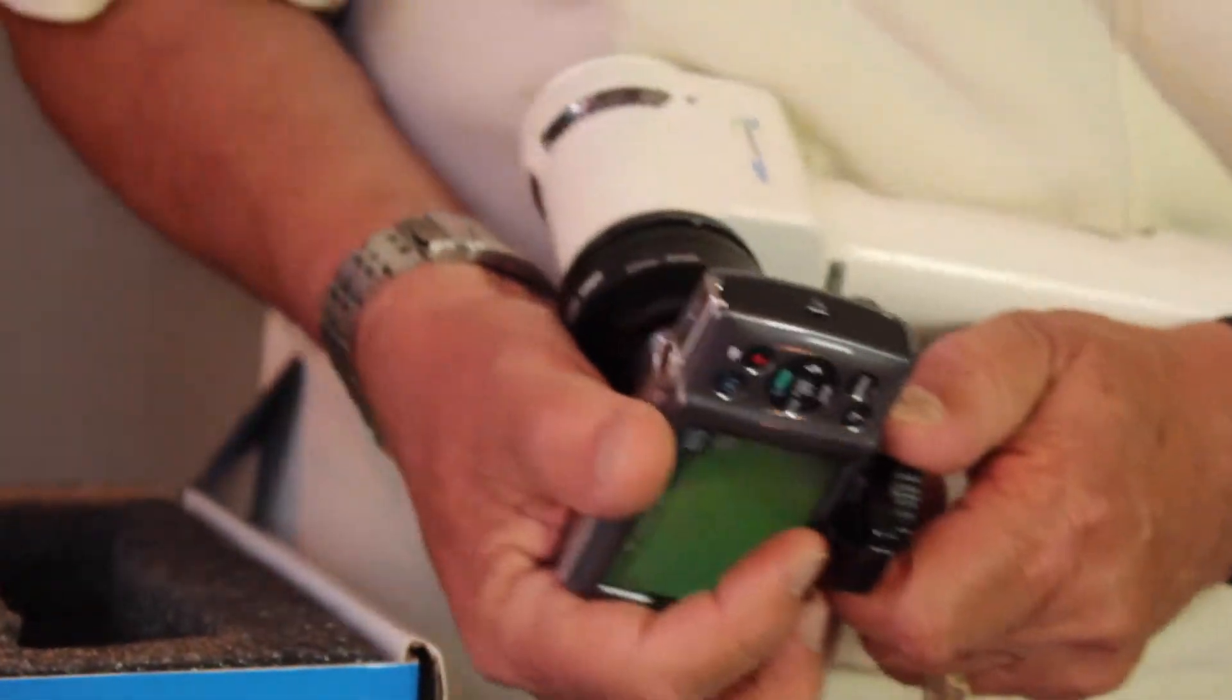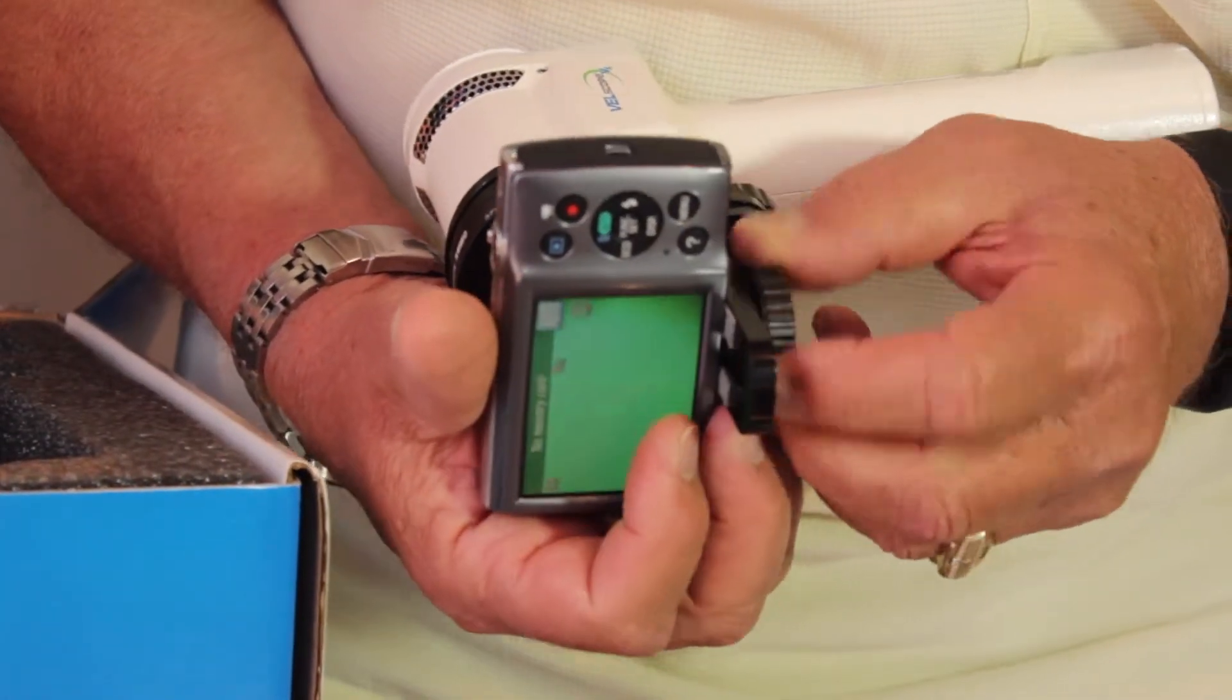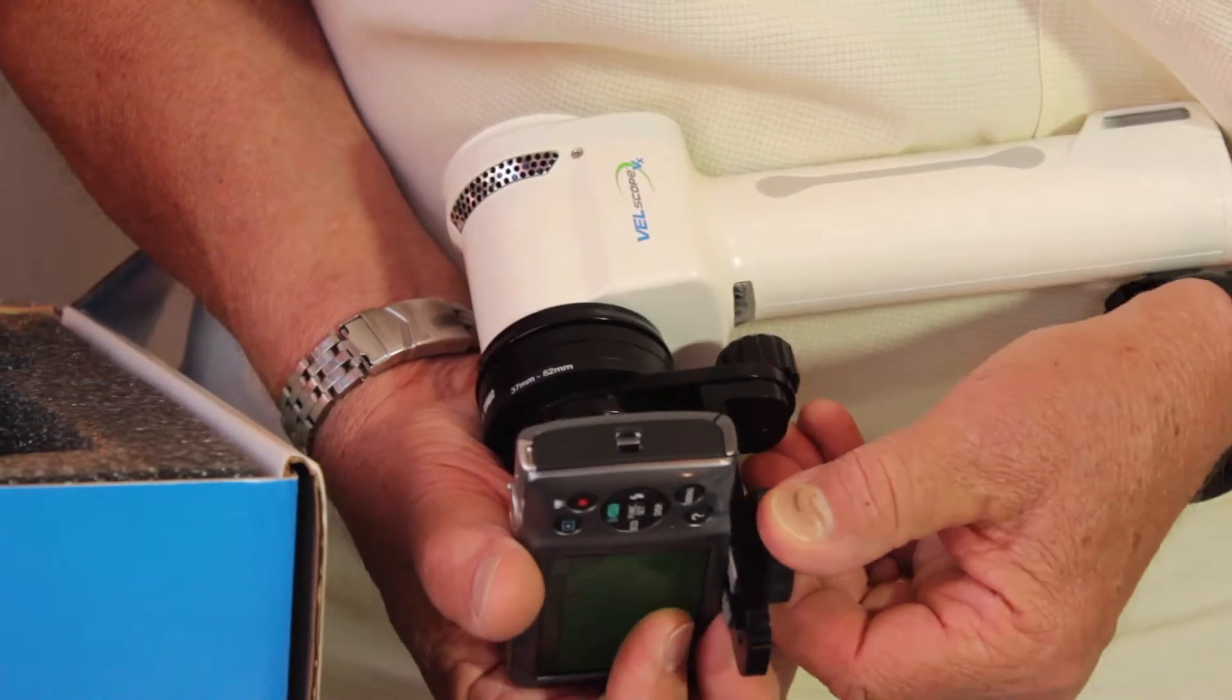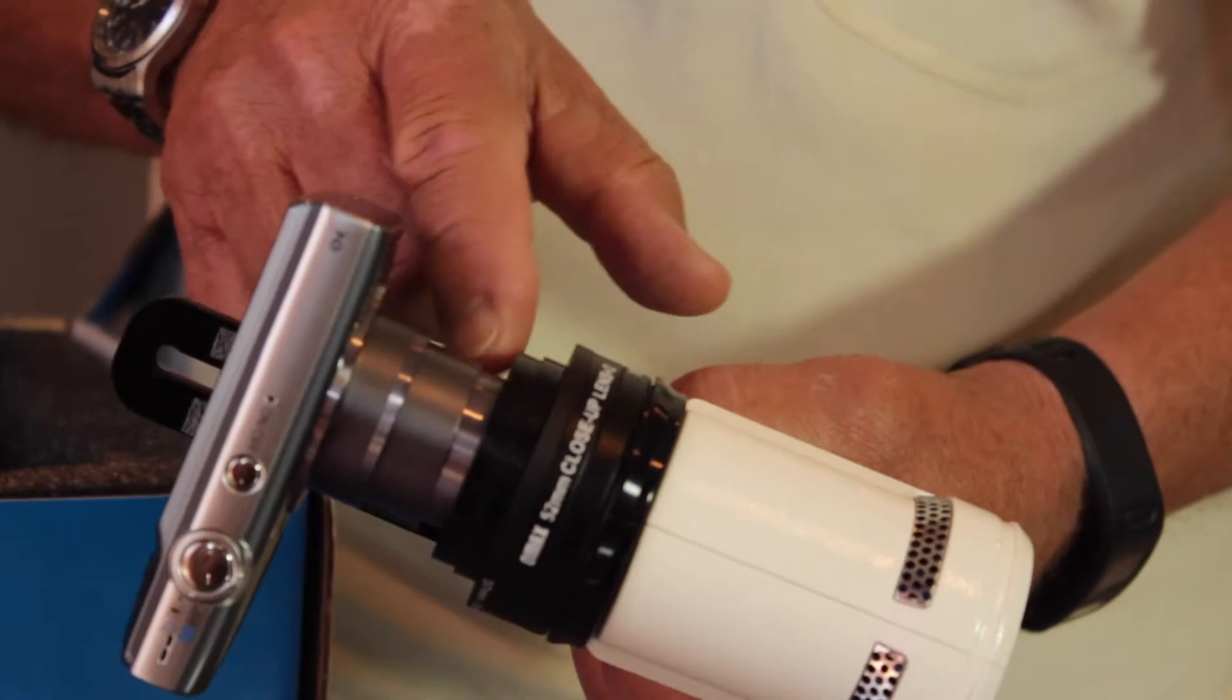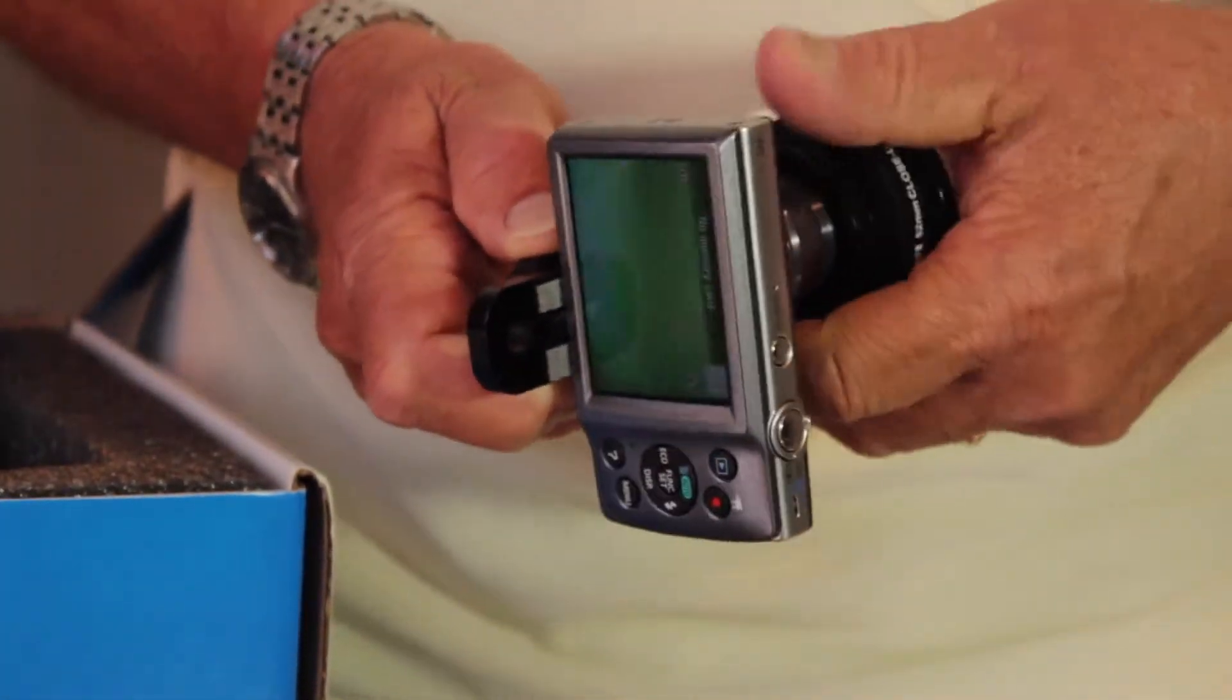You will loosen this screw here on the bottom where the thumb screw is and you will very carefully move it in to the Velscope adapter. Center that as much as you can and then you'll want to tighten this up.